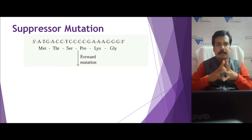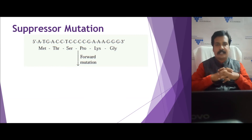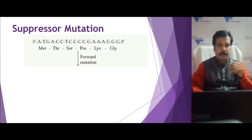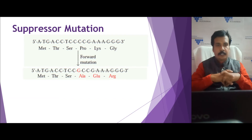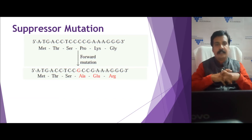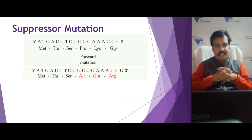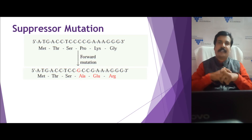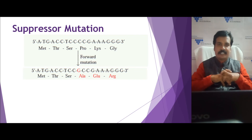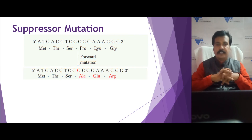In the figure showing suppressor mutation, we have a sequence: methionine, threonine, serine, proline, lysine, and glycine. A forward mutation occurs by means of an addition — between serine and proline, an additional guanine is inserted. So TCC codes for serine, and the additional guanine starts changing the next triplet codon. Instead of CCG coding for proline, the additional G gives GCC for alanine, GAA for glutamine, and AGG for arginine, and the sequence is altered.